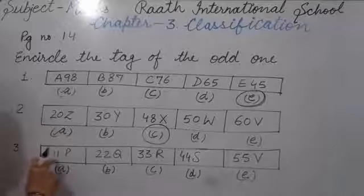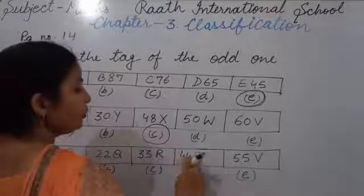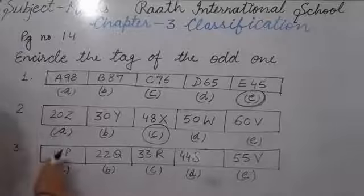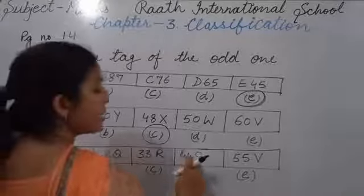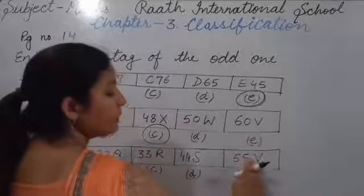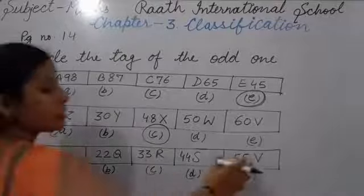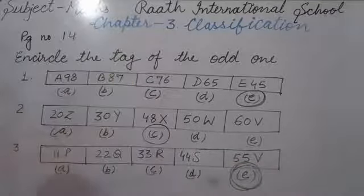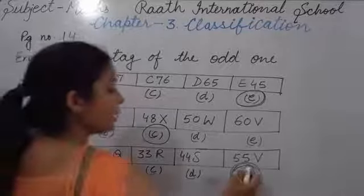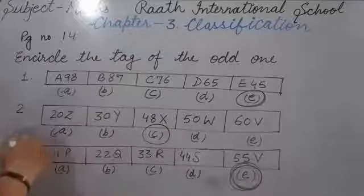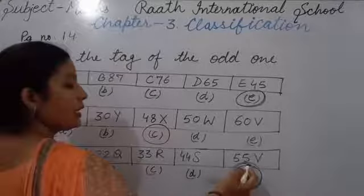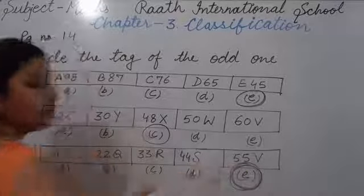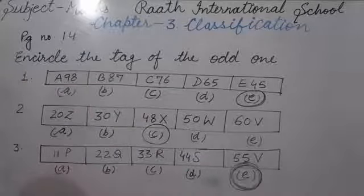Now question three: 11P, 22Q, 33R, 44S, 55B. Numbers 11, 22, 33, 44, 55 — these are correct. Now check alphabets: P, Q, R, S — then there will come T. But there is given B at the place of T. That means 55B is different from others. So we circle it. So like this you will complete your Chapter 3. Thank you.